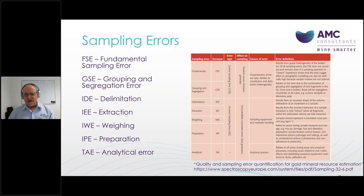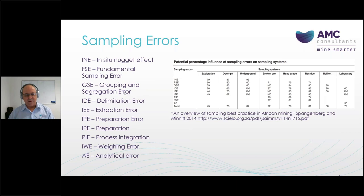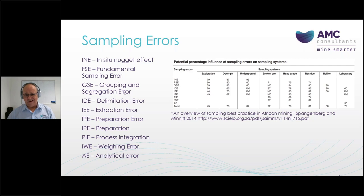So how do we try to minimize these errors and what are the potential impacts? A study done in 2014 by colleagues from South Africa looked at a range of sampling systems across the industry, examining potential sampling errors all the way from exploration through mining, broken ore, head grade, bullion, and laboratories. It's a bit shocking — average total errors around 90% in broken ore, meaning you've got a chance of being 100% either side of your assay. That's a concern, so you want to minimize that as much as possible.